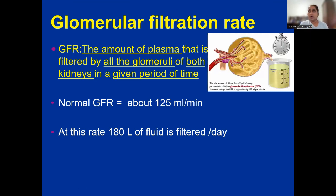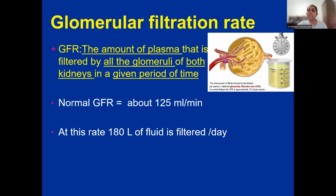Now we will move on to the definition of the glomerular filtration rate. GFR is the amount of plasma that is filtered by all the glomeruli of both kidneys in a given period of time. The definition must include 'all glomeruli' and 'both kidneys.' Normal GFR is about 125 milliliters per minute. At this rate, it would be 180 liters per day.